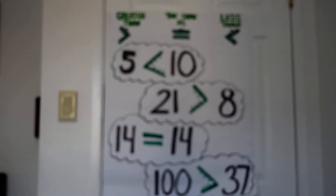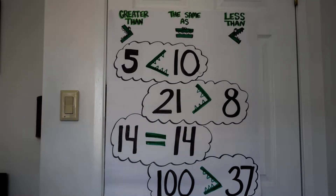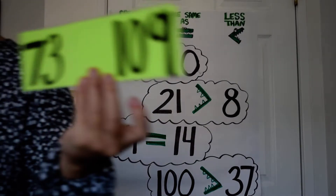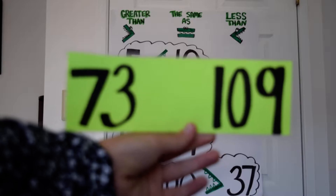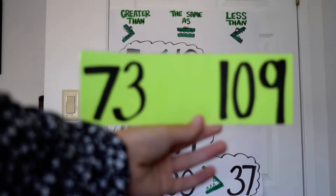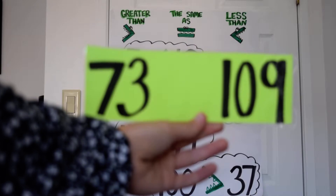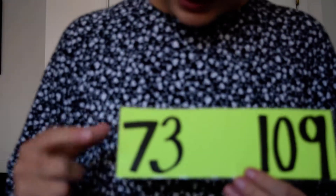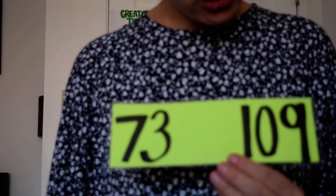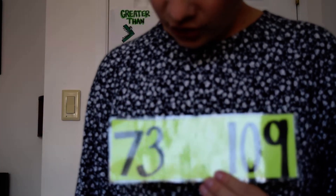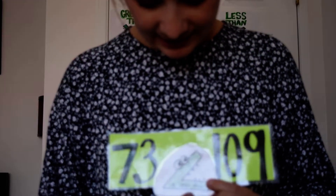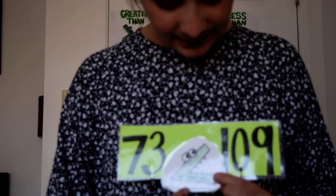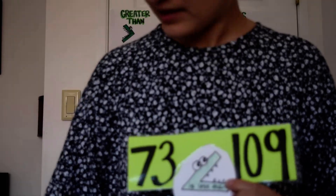Let's try a few practice problems. We have seventy-three and one hundred and nine. Which way should my alligator face? My alligator is hungry, so he wants the bigger number — he's going to face one hundred and nine. Seventy-three is less than one hundred and nine.